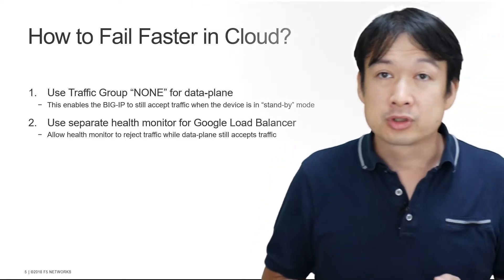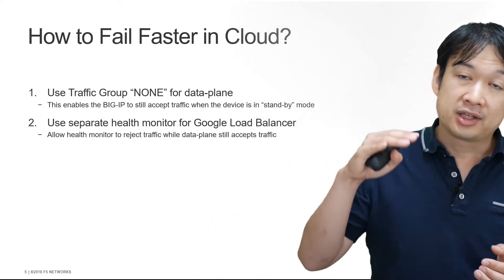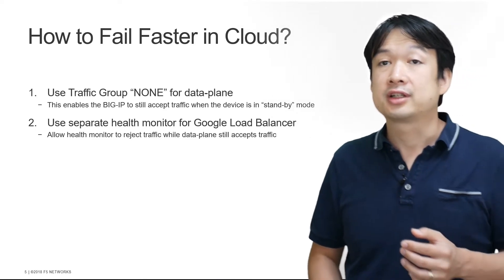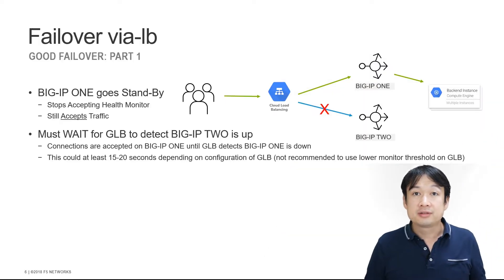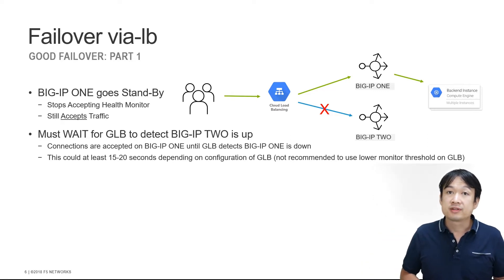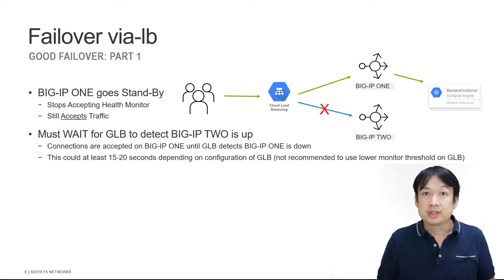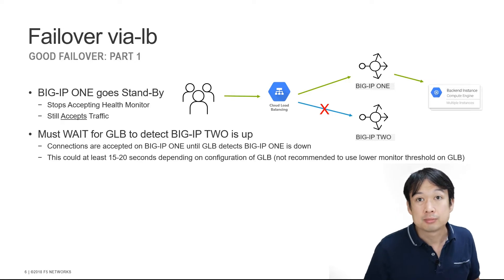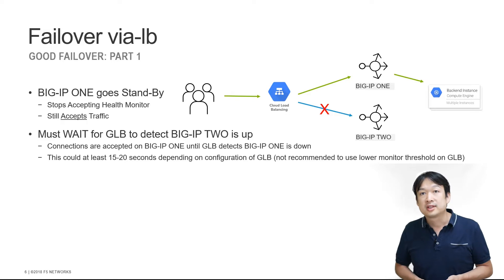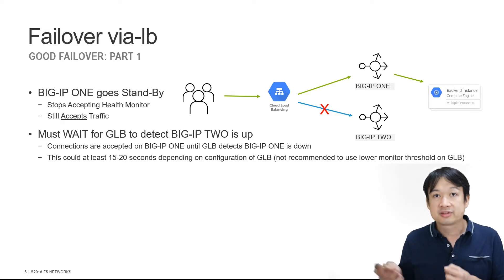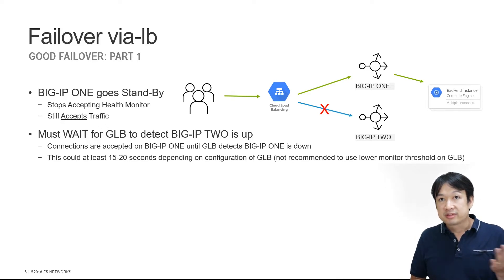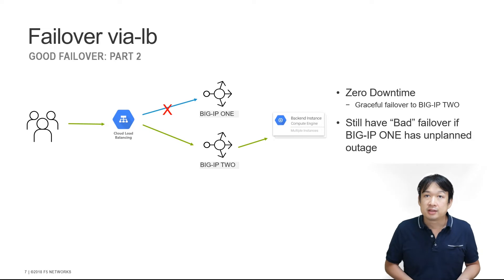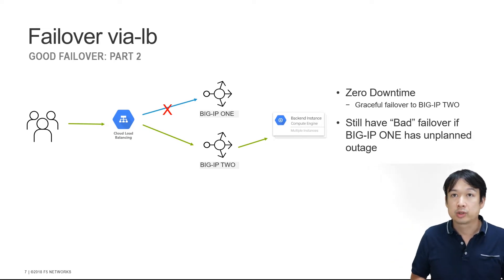The second item is that we're going to use a separate monitor for the Google Cloud Load Balancer. What this is going to enable us to do is to tell the Google Cloud Load Balancer to stop sending traffic to the BIG-IP device, but it will still continue to accept that traffic on behalf of the client. In this new scenario, when BIG-IP 1 is put into standby mode, it only stops accepting traffic on port 40,000 — the monitor port — but still accepts traffic on port 80, so clients are still getting traffic through. Once the Google Cloud Load Balancer sees that BIG-IP 2 is available, it will start sending traffic to BIG-IP 2 and stop sending to BIG-IP 1. This is much more graceful than the previous scenario where we were dropping packets.